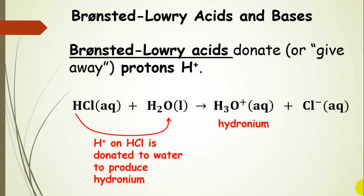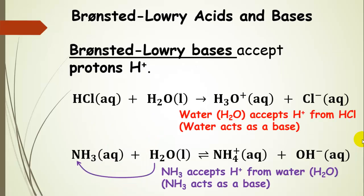Bronsted-Lowry acids are a slightly more general definition — they donate or give away protons, H+. The same thing is happening as before, but now we're defining the acid a bit differently. We can see that this H+ is donated to water, which produces hydronium and, of course, the chloride anion. With the Bronsted-Lowry definition of a base, we say that they accept protons from a donor. Here, water is actually acting as a base because it accepts the H+ from hydrochloric acid.